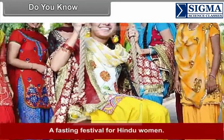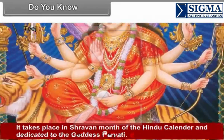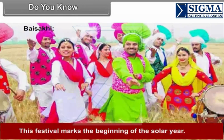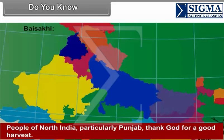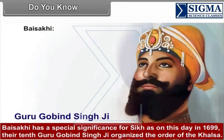Teej is a fascinating festival for Hindu women. It takes place in the Shravan month of the Hindu calendar, dedicated to the goddess Parvati. Baisakhi marks the beginning of the solar year. People of North India, particularly Punjab, thank God for a good harvest. Baisakhi has special significance for Sikhs, as on this day in 1699, their 10th Guru, Gobind Singh Ji, organized the order of Khalsa.